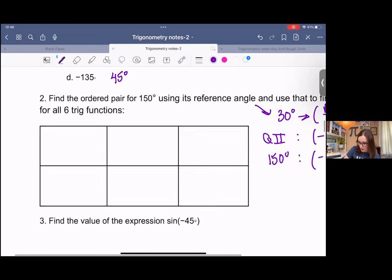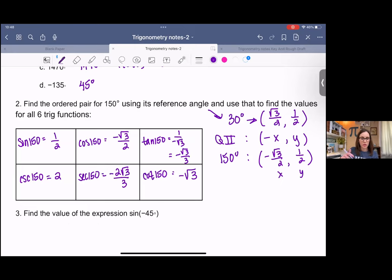Now I can use those coordinates and my trig ratios to find the six trig functions. We're going to do sine, cosine, tangent, and the reciprocal functions. So I want you to pause it, try it, come back and check your work. For sine, you have the y value, which is a half. Cosine, you have the x value, which is negative square root 3 over 2. Tangent, you have y over x. When you simplify that, you get negative root 3 over 3.